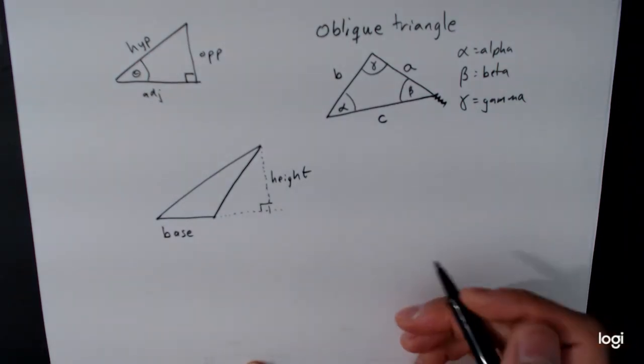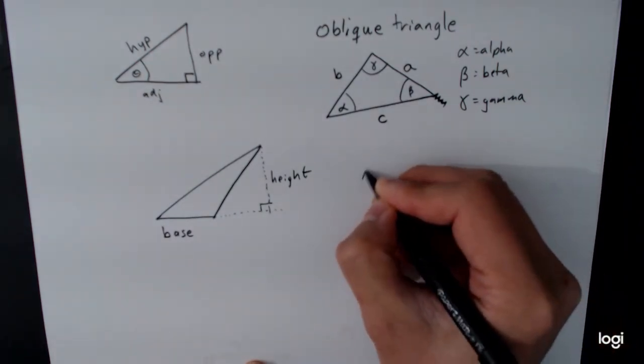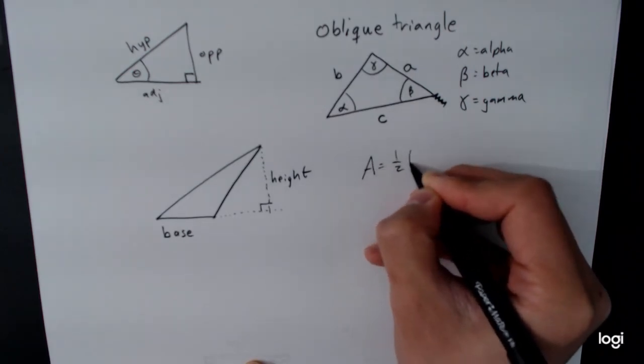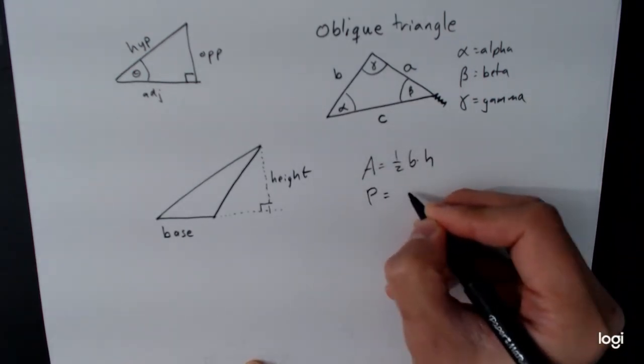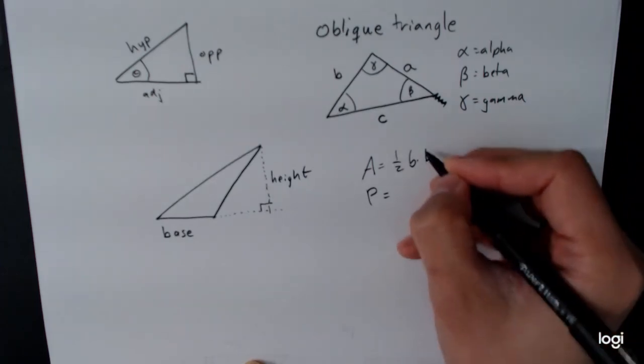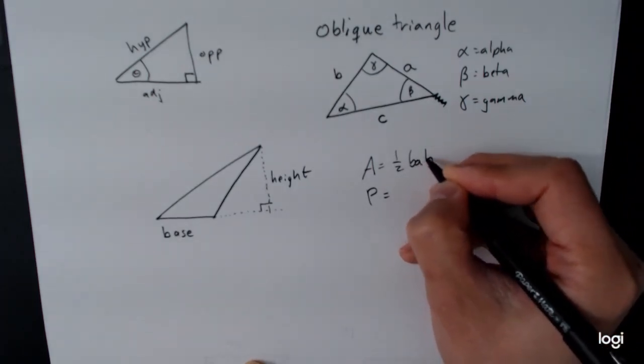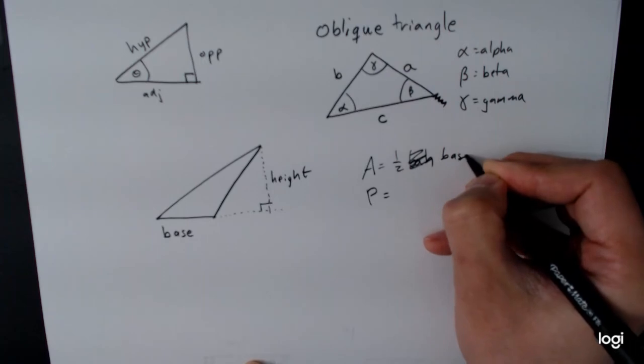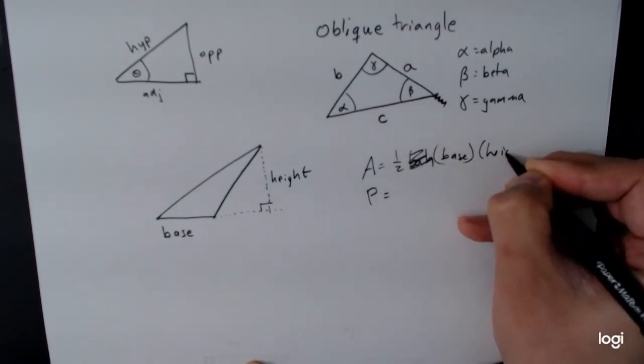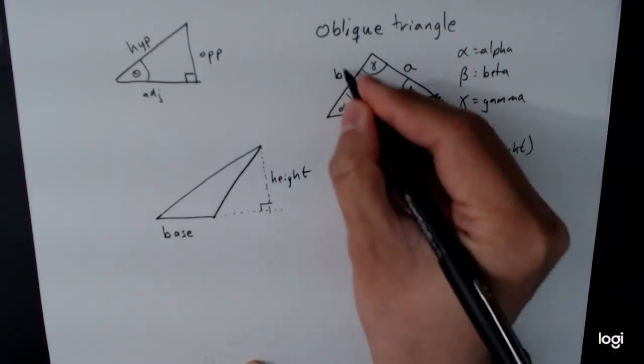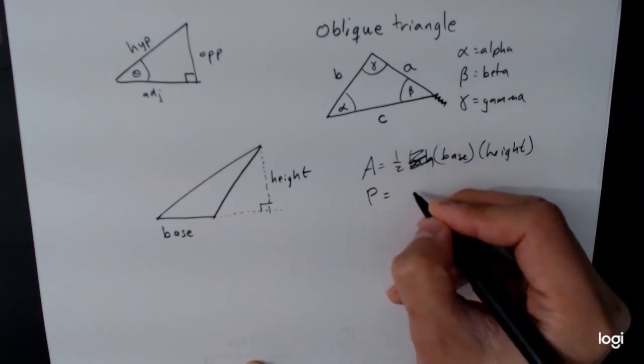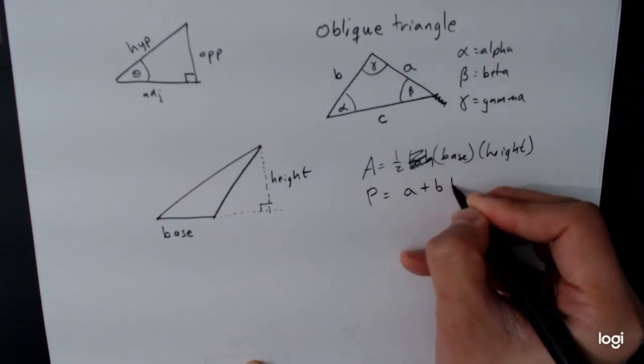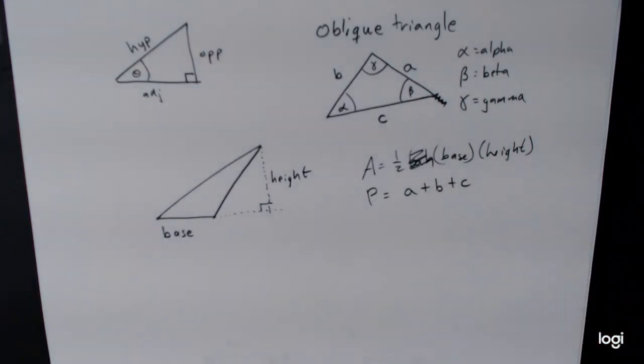And so you might remember some basic facts about these triangles, such as the area is one-half base times height. The perimeter of a triangle is the sum of the sides. I should really write this as base times height because I've already got the letter B up here, meaning something else. The perimeter is the sum of the sides, A plus B plus C, and things like that. So those basic geometric facts are going to be there, and you're going to have to keep those in mind.